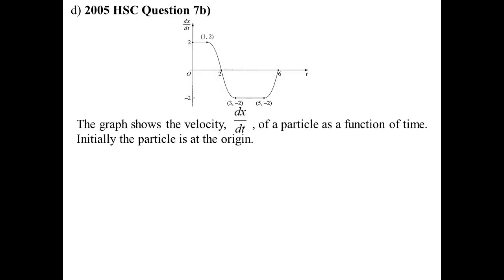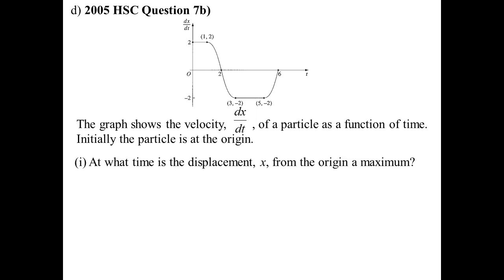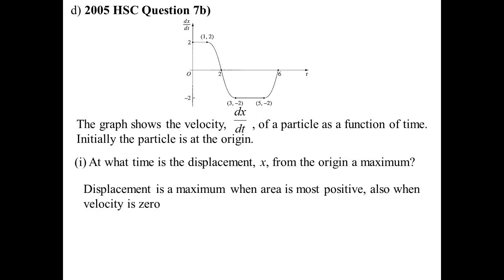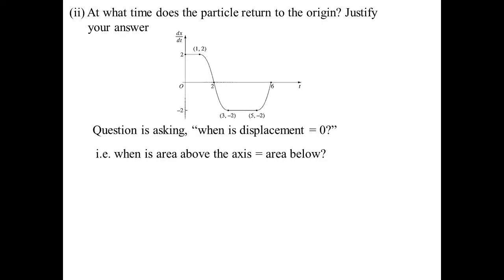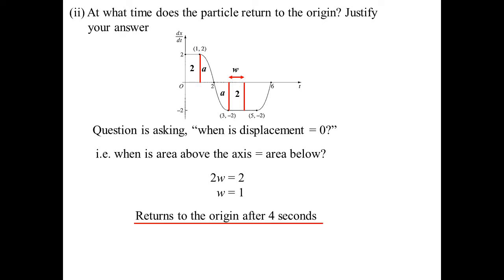Here is another velocity-time graph with the object initially at the origin. Displacement is a maximum when velocity equals zero — i.e., t = 2. The object returns to the origin when the area above equals the area below. From 0 to 1 the rectangle has area 2; assuming symmetry, that matches the negative region. We need a rectangle of area 2 below, with height 2, so width = 1, giving t = 4 seconds.